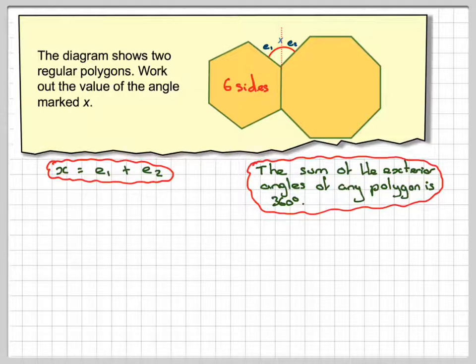We've got six sides here, so therefore E1 will be 360 divided by six sides, which gives me 60 degrees. So that angle here is 60 degrees.